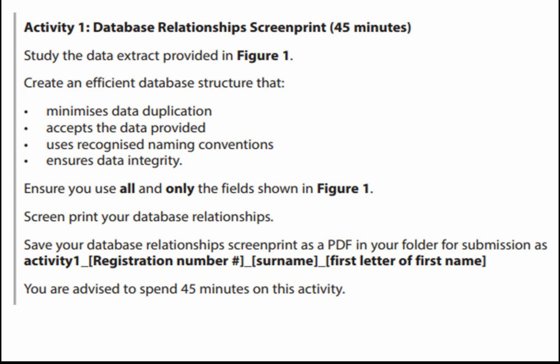Data integrity can mean two things: one is the integrity of the actual data, which we handle with validation, and the other is referential integrity. That means we can't create, for example, a sale for a caravan that doesn't exist. We need to ensure that we use all and only the fields shown in Figure 1, which we've already taken into account in the design.